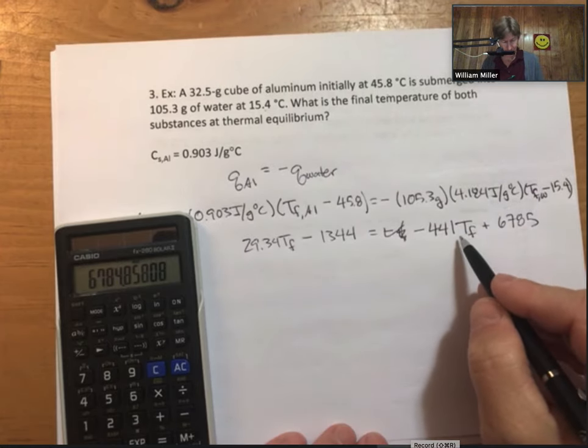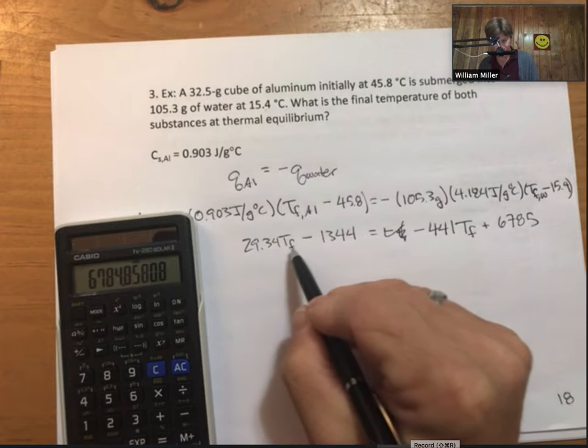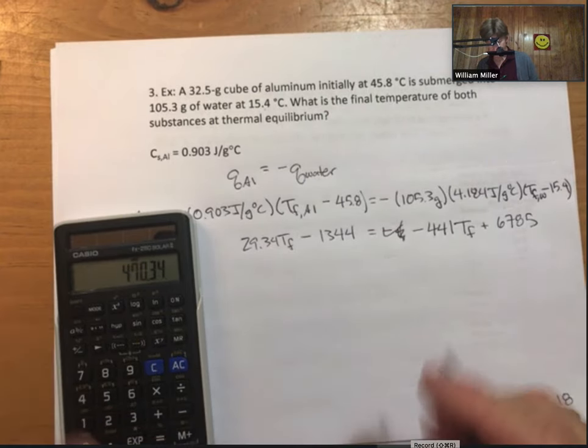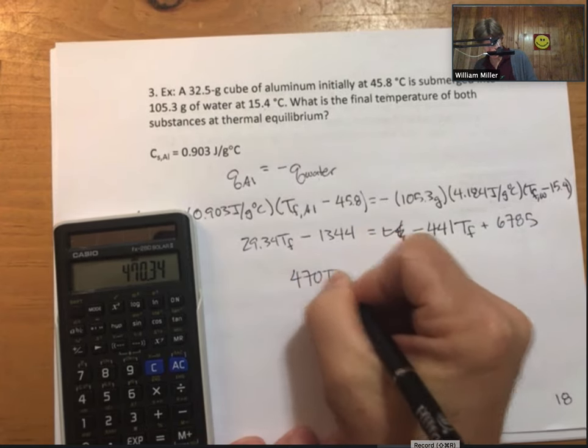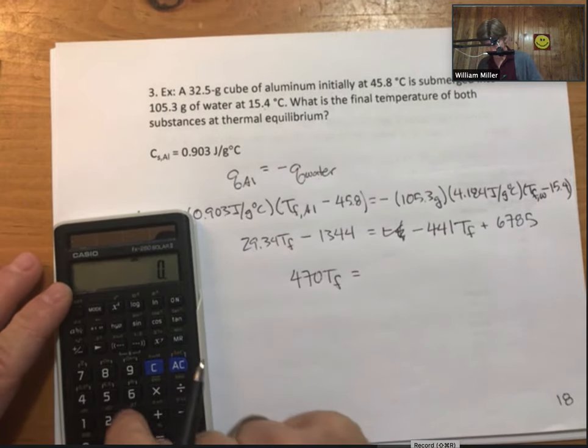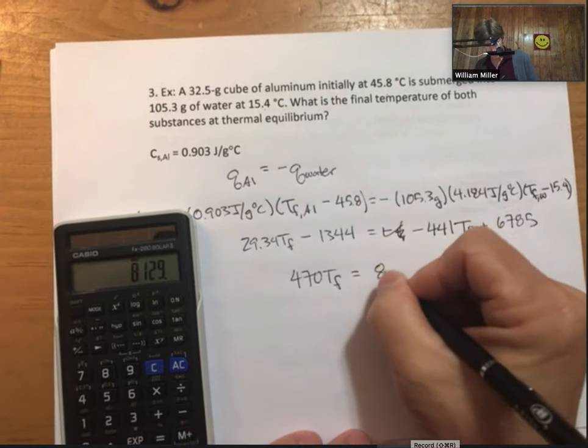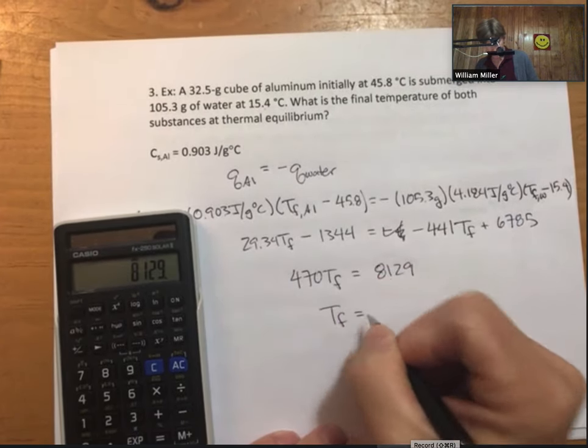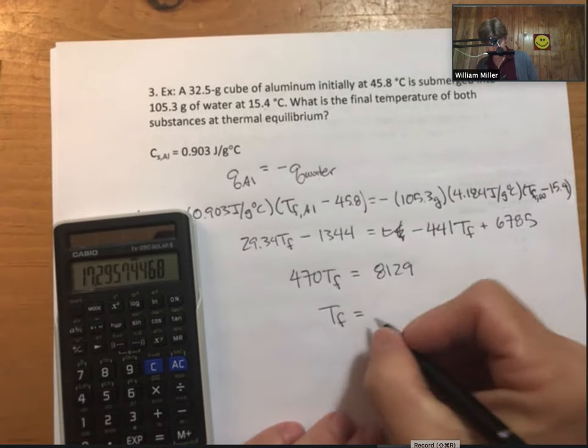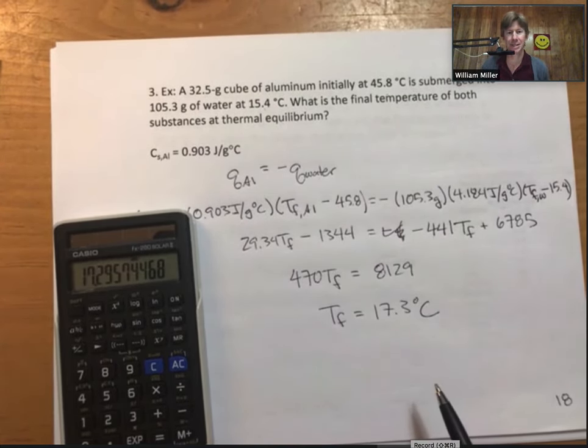29.34 plus 4.184, I get 33.70. Then this on the other side: 67.85 plus 13.44. Divide through, and I get my final temperature 17.3 degrees Celsius.